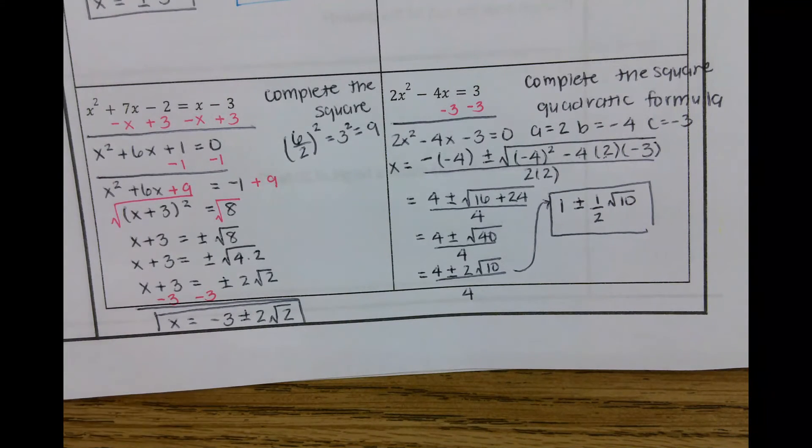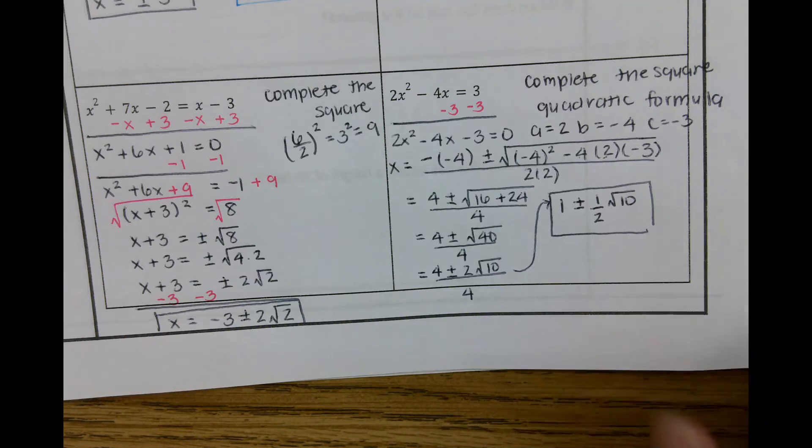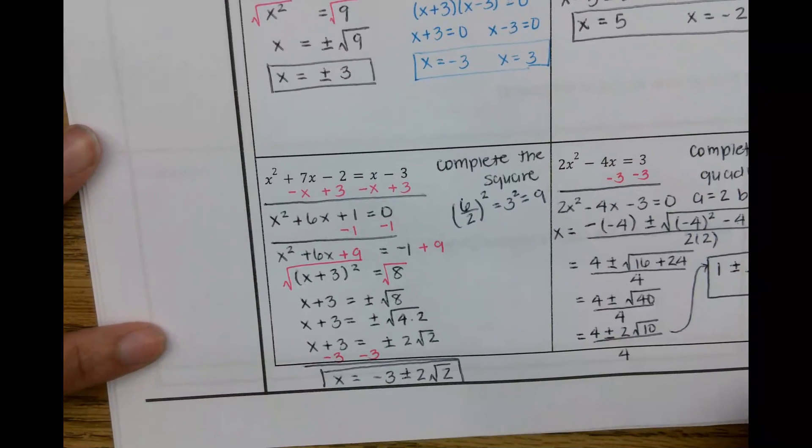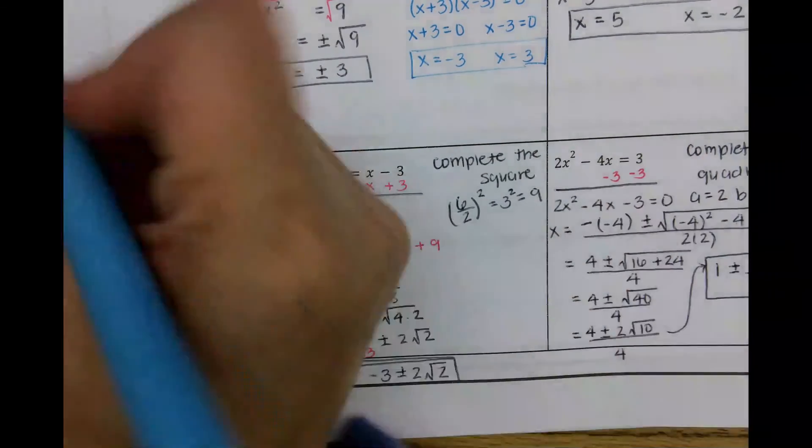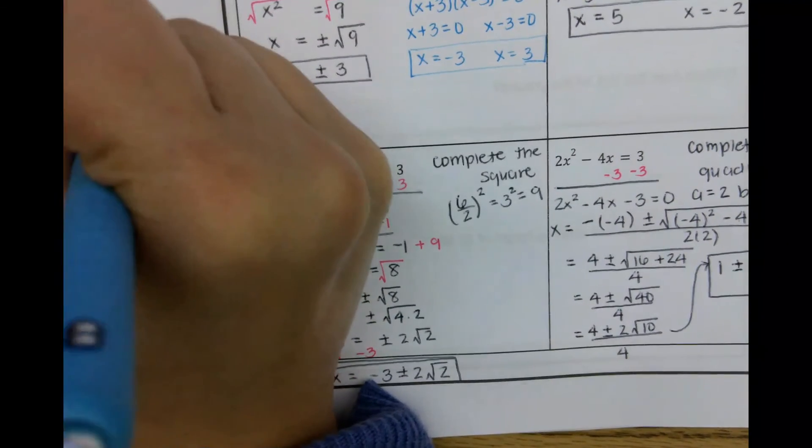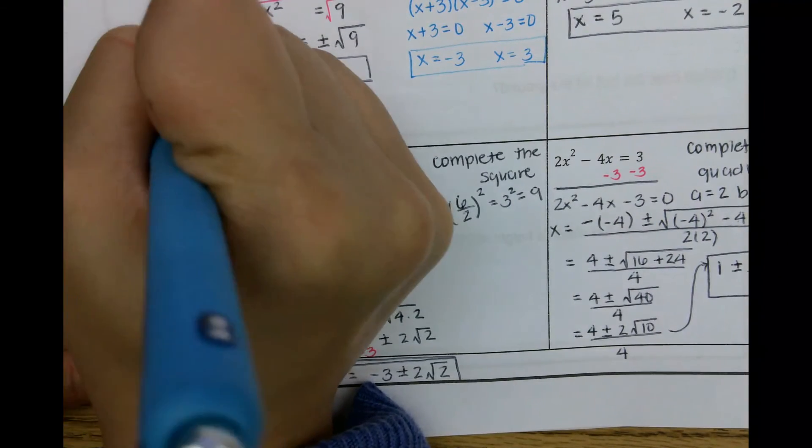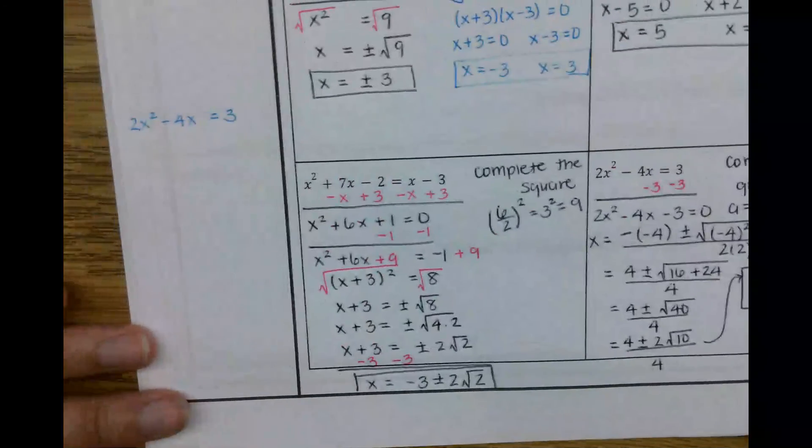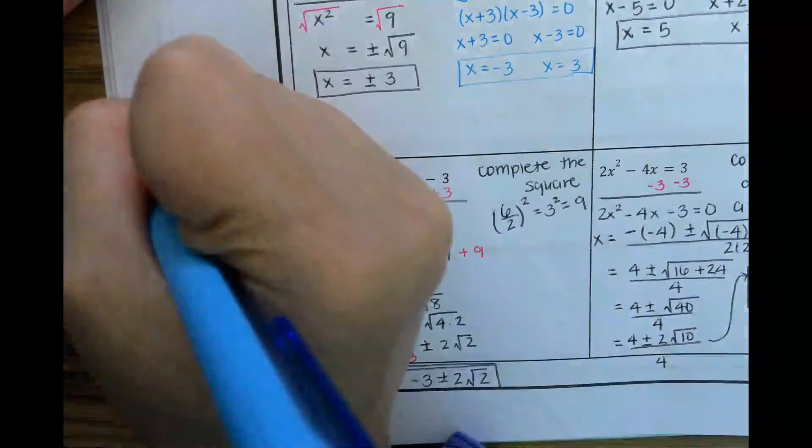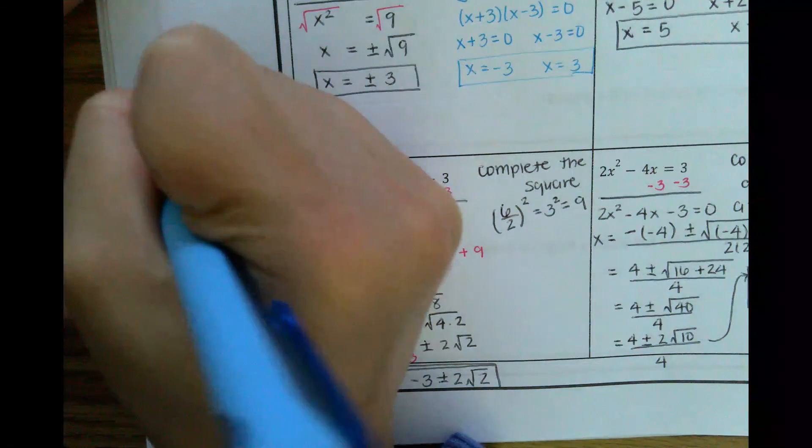So if you prefer the completing the square, that is fine. So let me do it again, but this time with completing the square. So if I'm going to complete the square, I'm not even going to move that 3. So I need my a to be 1, so I'm going to factor out that 2 first.